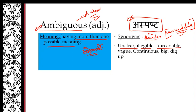You will not be able to read it. Vague means not clear. Continuous but it is not clear, it is also an ambiguous word. Big is very big but it is not clear, that is ambiguous. Dig up means to remove something, so it is ambiguous.